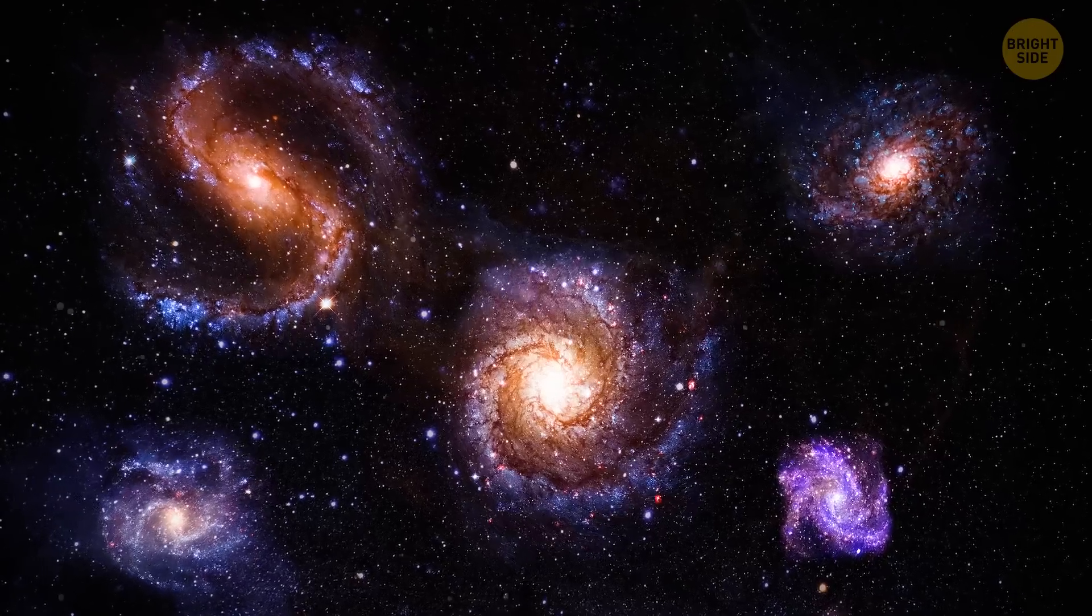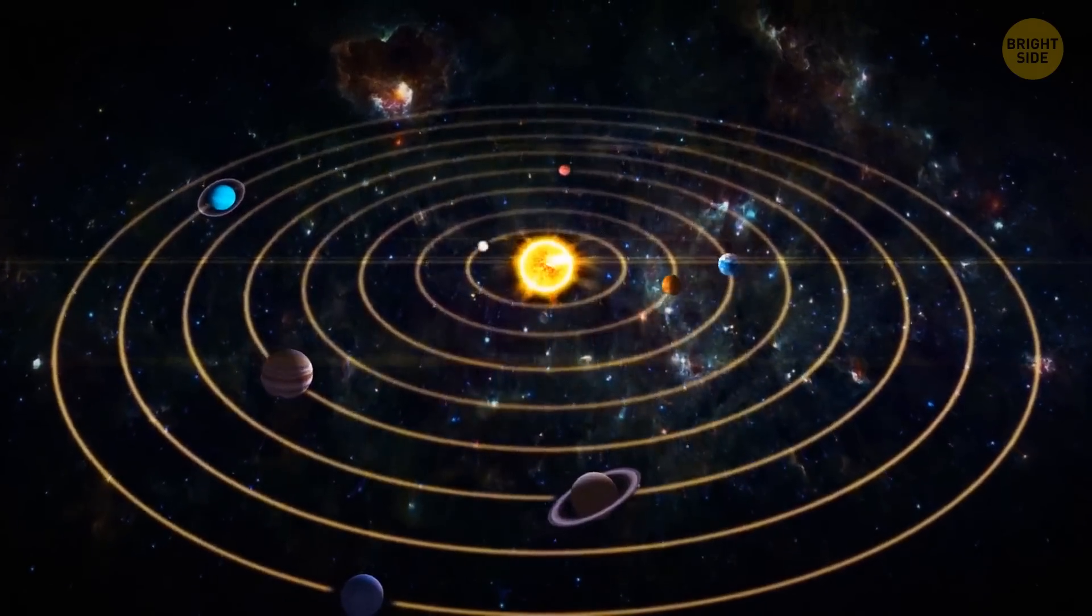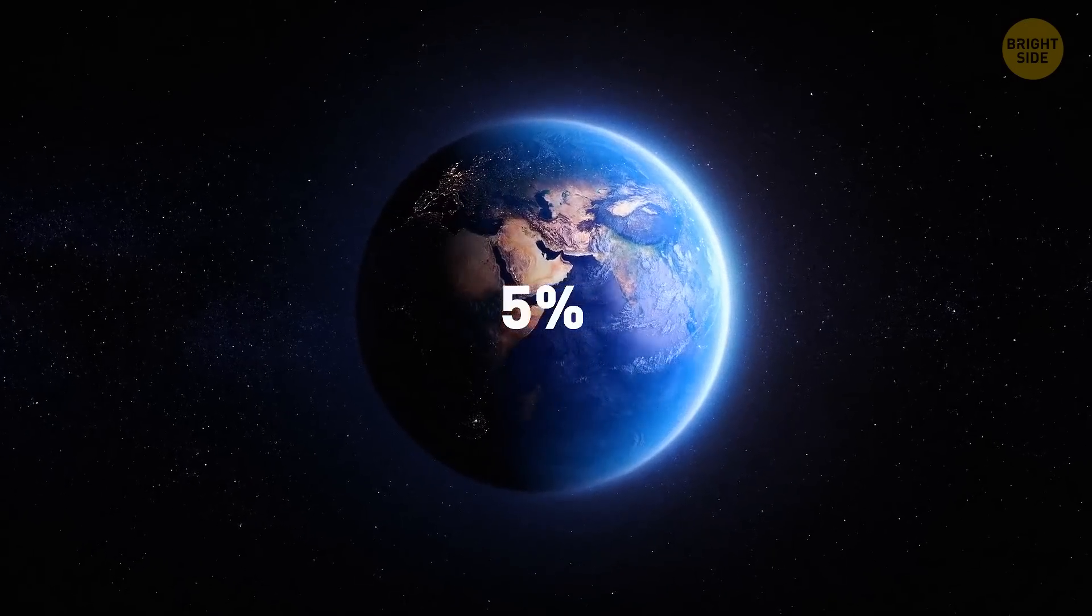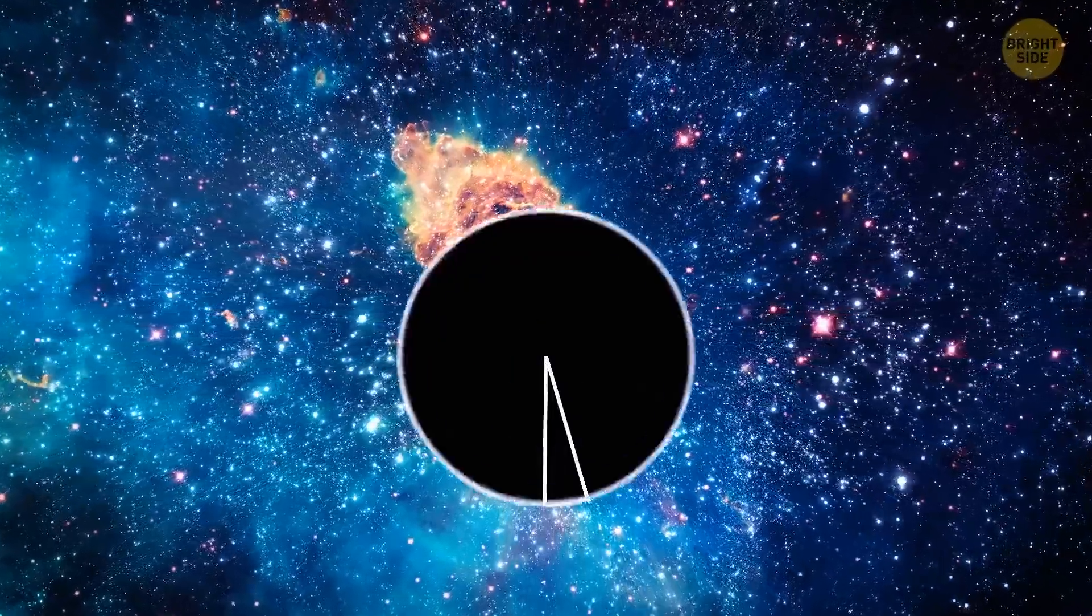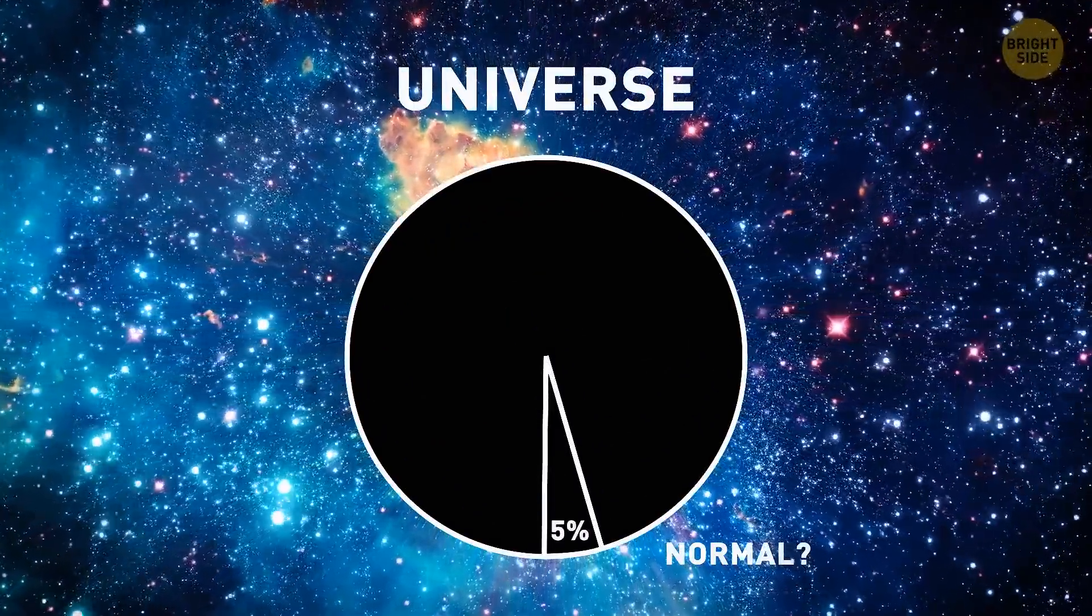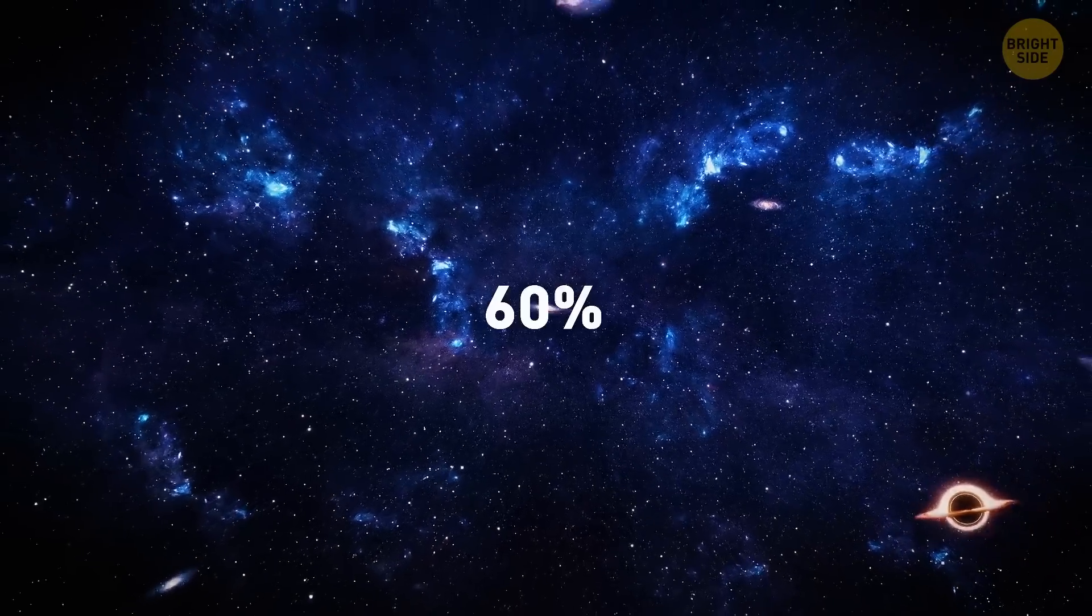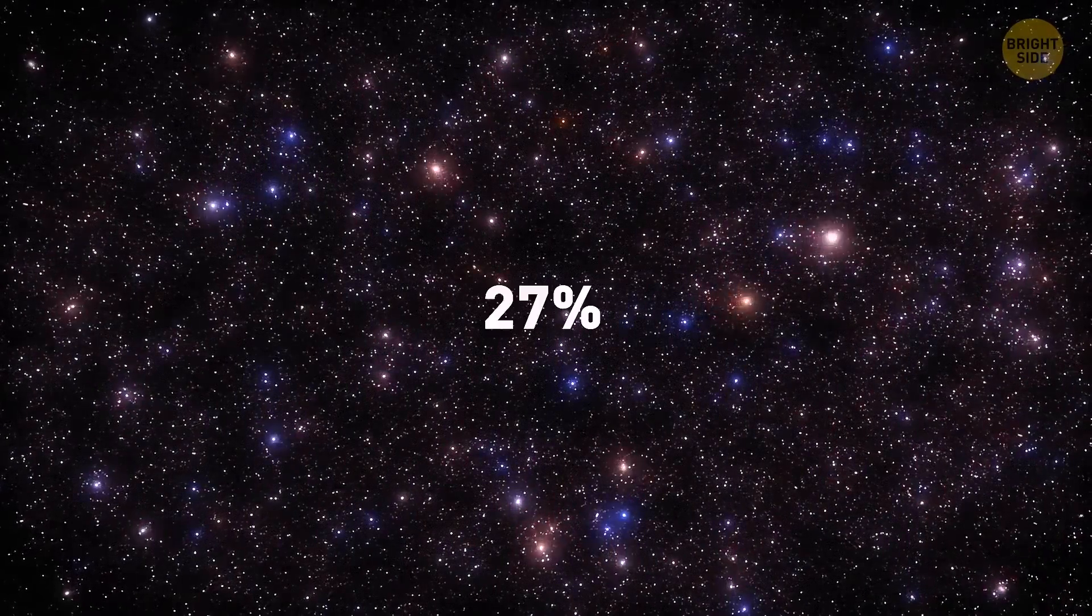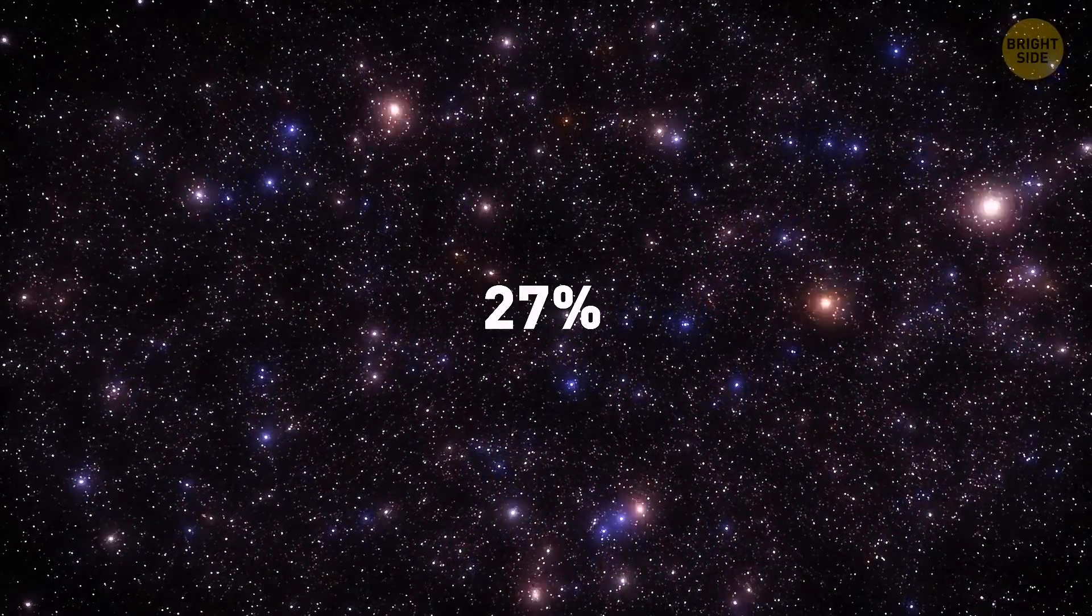Normal matter, which is everything you can see with your own eyes or with the help of instruments, makes up around 5% of the universe. Since it's such a small fraction of the universe, maybe we shouldn't call it normal? Dark energy takes up around 68%, and about 27% of the universe is dark matter.